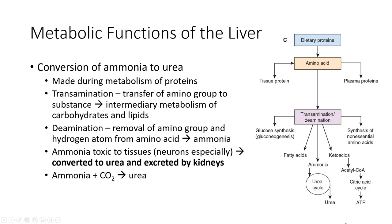Oxidative deamination involves the removal of amino groups from amino acids and the conversion of amino acids to keto acids and ammonia by transamination, allowing the transfer of an amine group from one molecule to another. Note that ammonia is very toxic to our body tissues, particularly our neurons. Ammonia released during deamination is rapidly removed from the blood by the liver and converted to urea. Essentially all urea formed in the blood is synthesized by the urea cycle in the liver and then excreted by the kidneys.